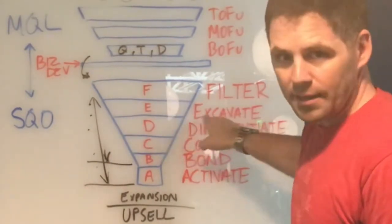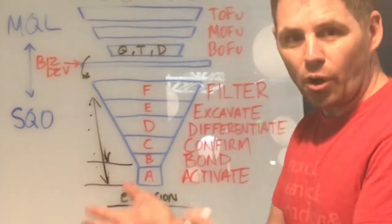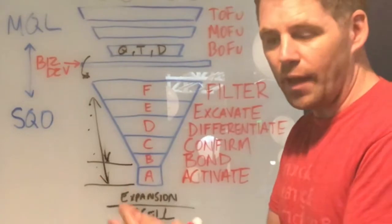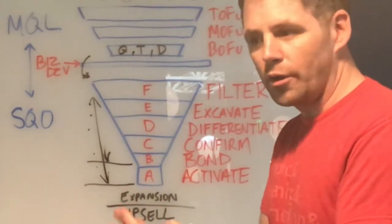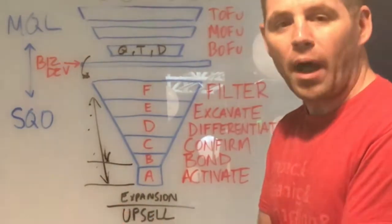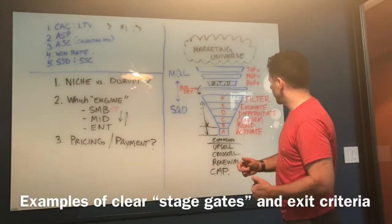F, filter. E, excavate. You're digging up. You're cultivating champions. You're getting that agree to explore. You're understanding their buying motivators, those sorts of things.